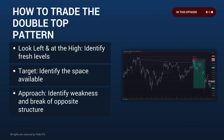First and foremost, look left at the highs and identify which levels are still fresh around those areas - is there any level that price will respect there? Secondly, identify the space available, which is essentially the target you'll be looking for. Third, pay attention to the approach - how price is approaching the high, is there momentum, is price showing any weakness, is price breaking opposite structure? All these variables help define whether to trade the double top.